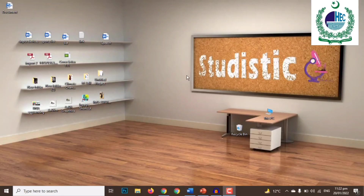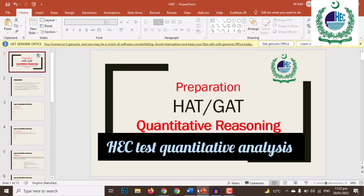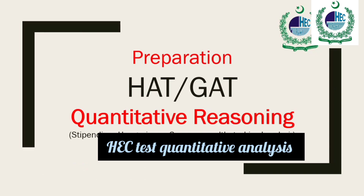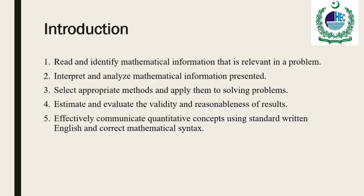In the previous videos, we talked about analytical reasoning questions in detail. Now we are coming toward quantitative reasoning. Quantitative reasoning is a complex and highly advanced psychometric test. It measures a person's ability to use mathematical skills to solve equations. In this section, students will demonstrate the ability to understand and communicate mathematical principles and to follow an extended line of formal reasoning.